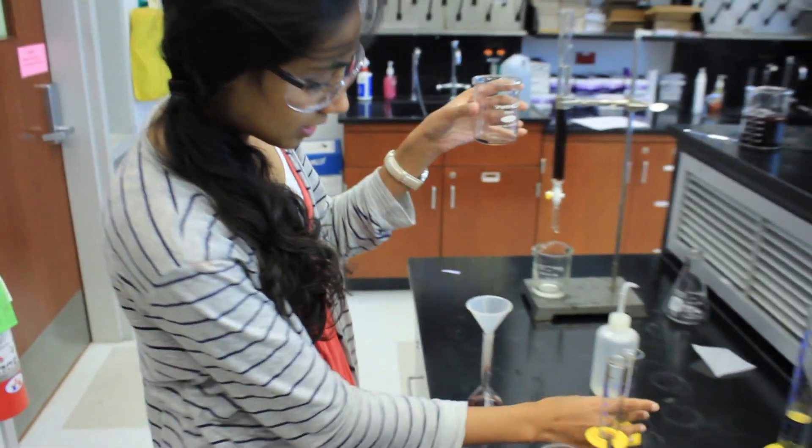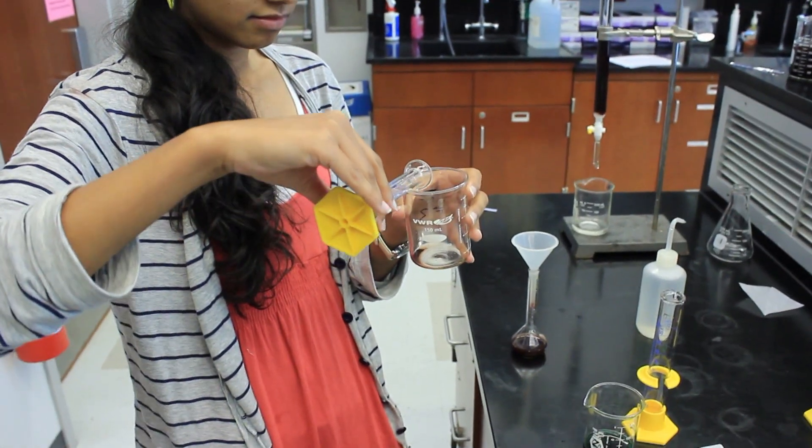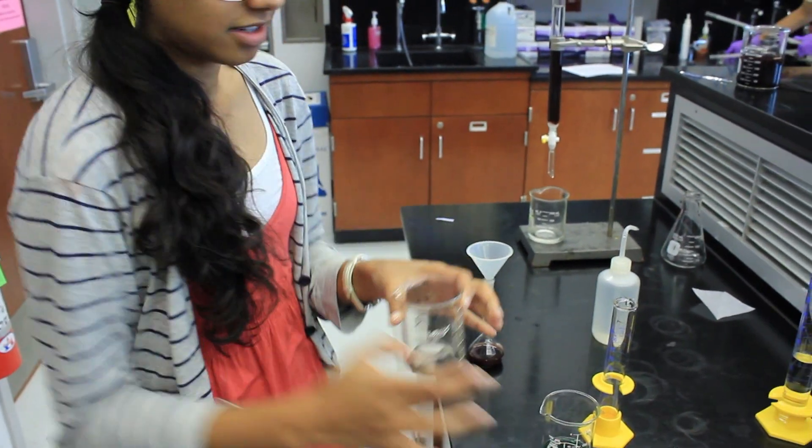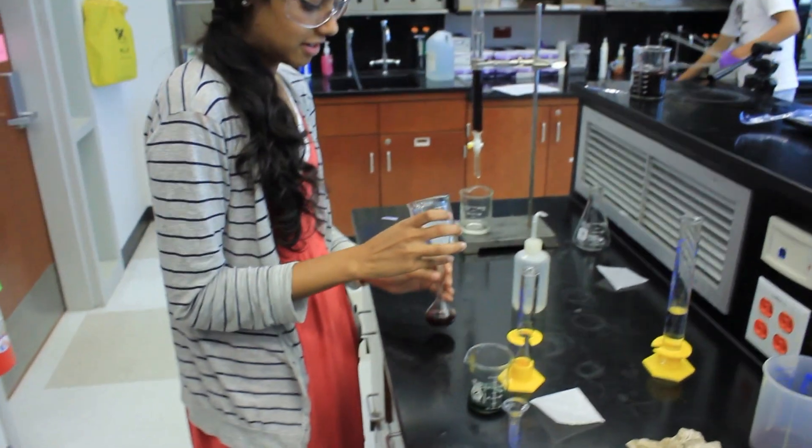And then you're going to rinse the leftover zinc with 5 milliliters of water. You're going to swirl that around and just pour it in here.